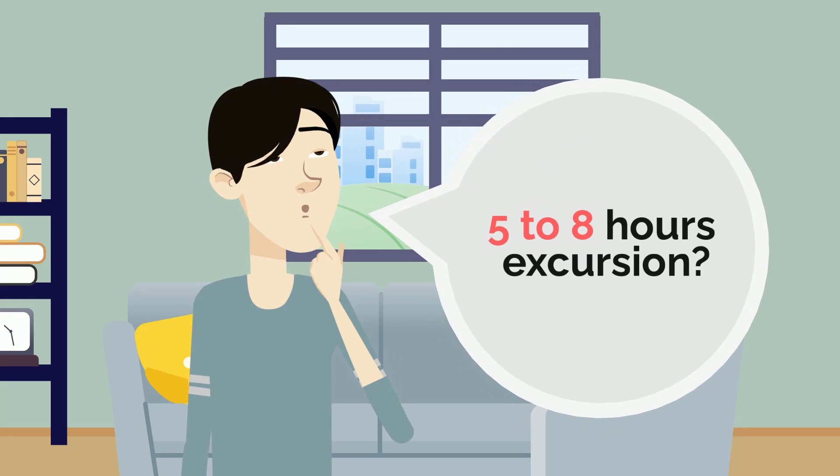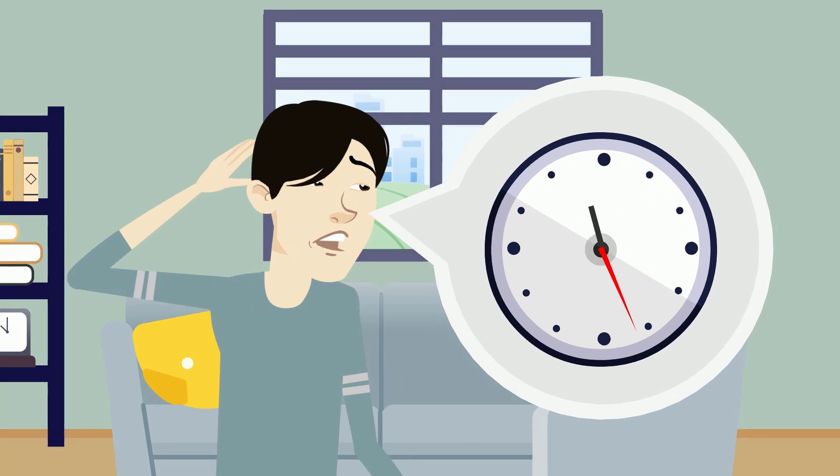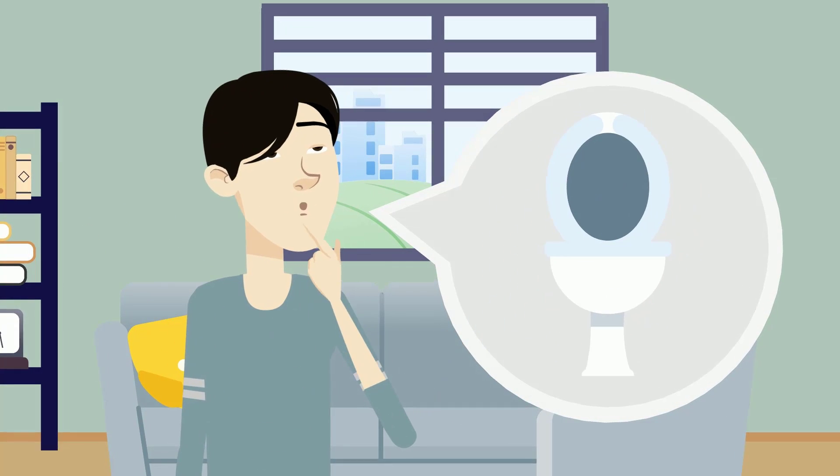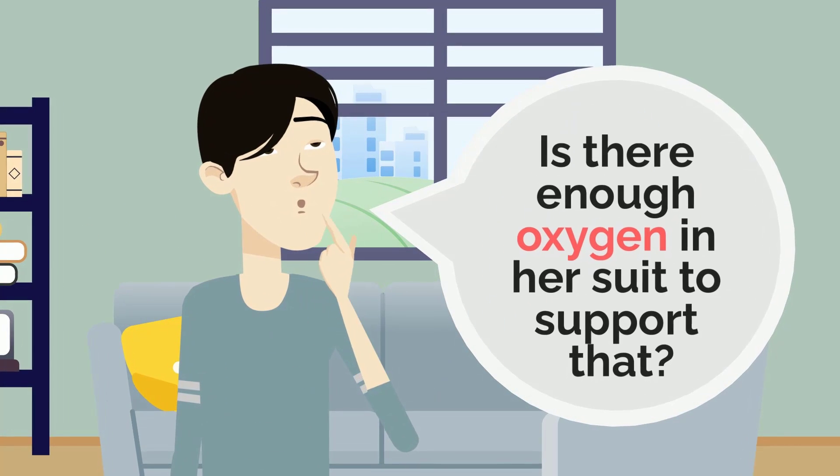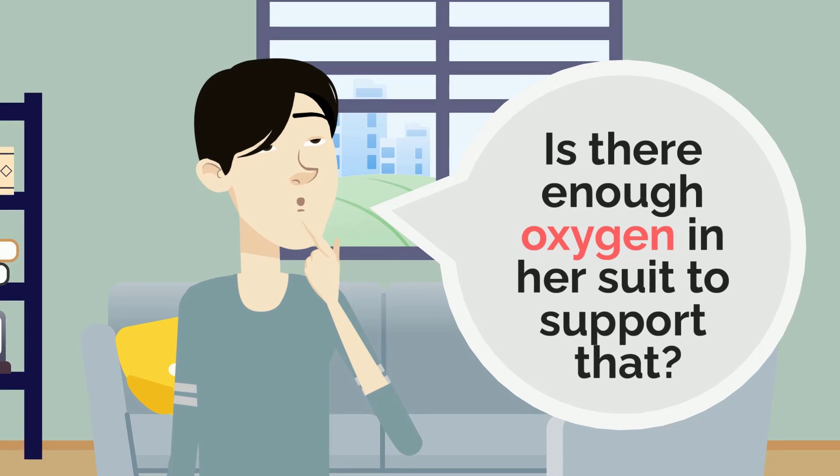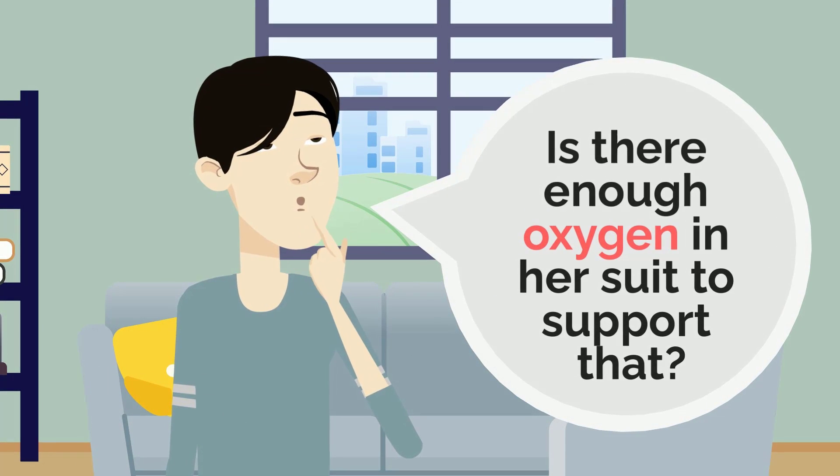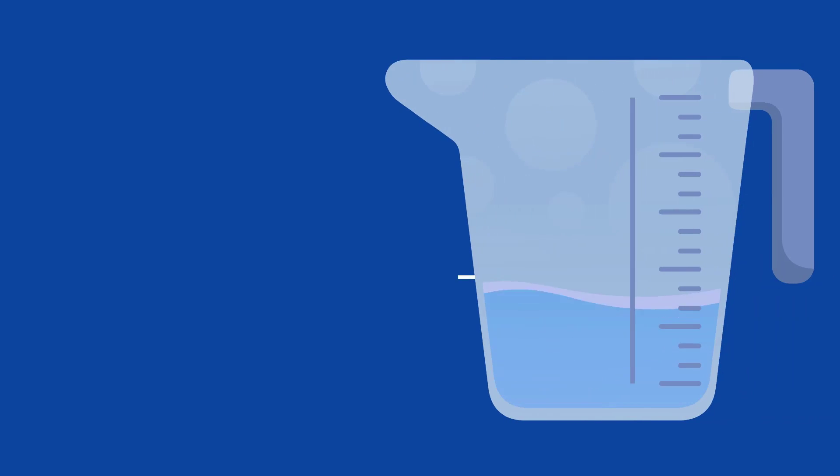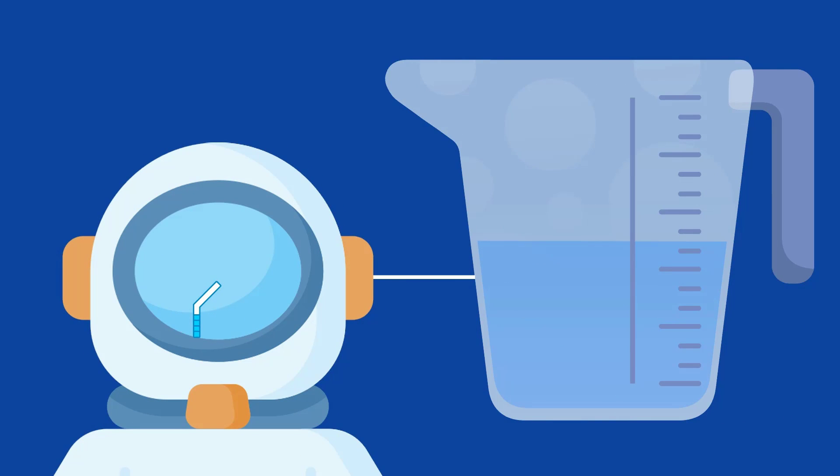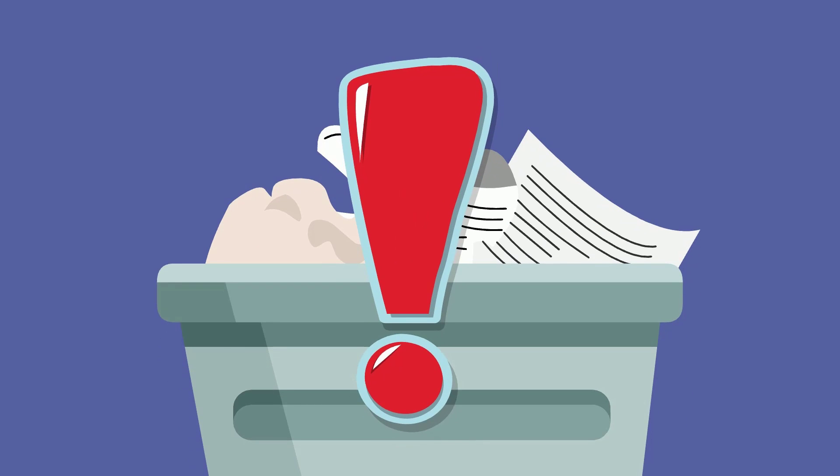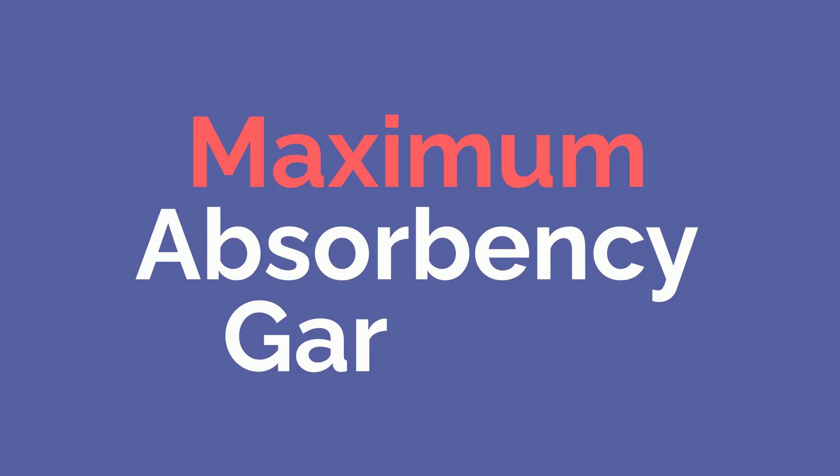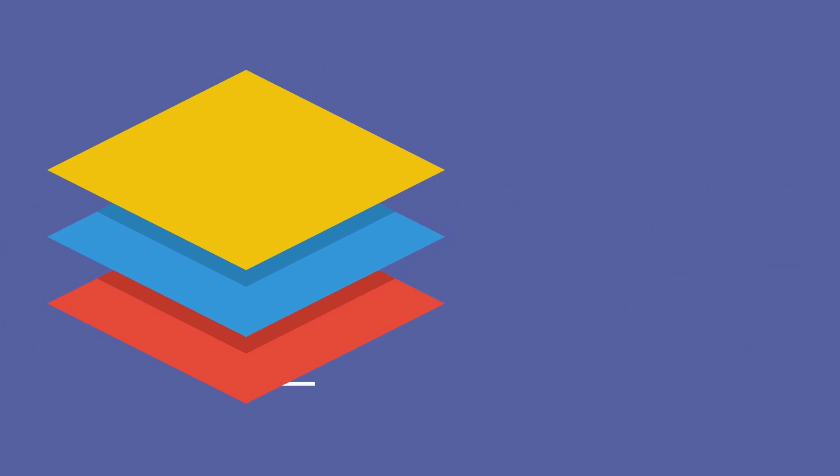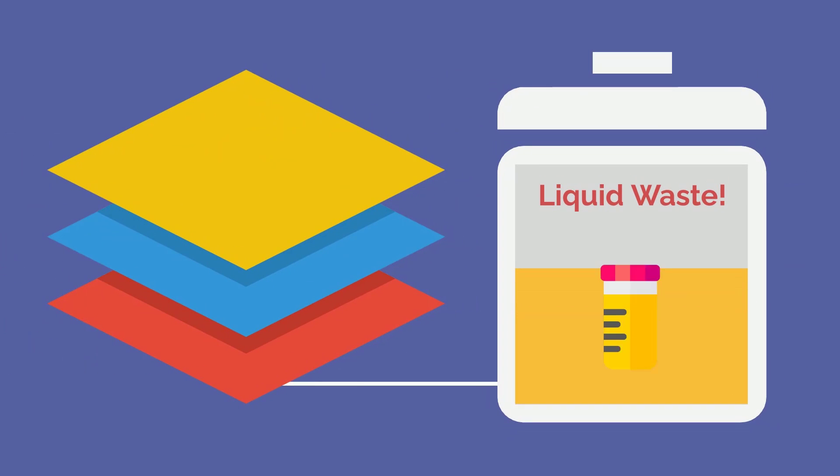Now, you might be thinking, 5-8 hours is a long time. What if she gets thirsty or has to use the bathroom? Or, more importantly, is there enough oxygen in her suit to support that? Great questions. And, interestingly enough, there is a supply of water stored in the helmet that connects to a straw right below her face. So, whenever she wants, she can just dip her chin and hydrate herself. As far as waste management goes, there is a maximum absorbency garment in the underlayers that efficiently absorbs liquid waste such as urine.